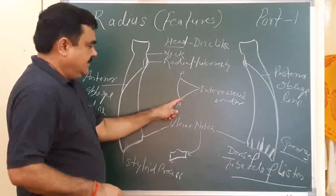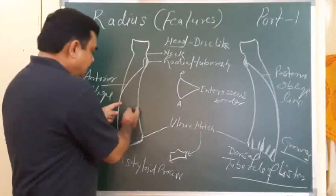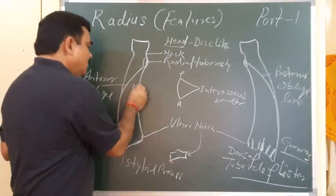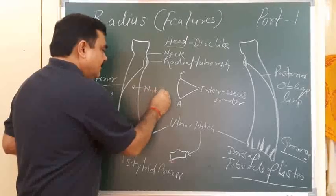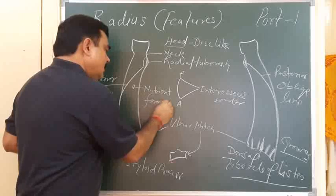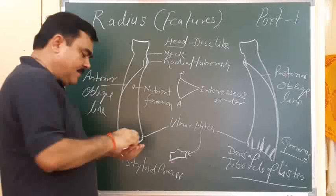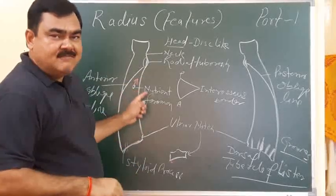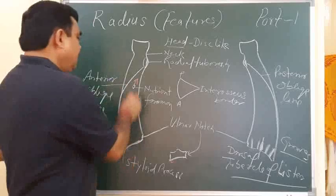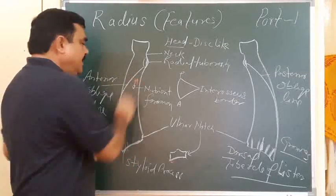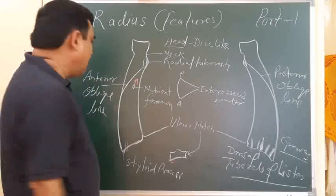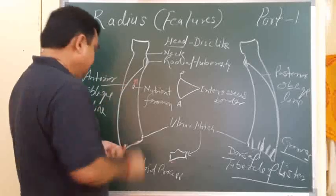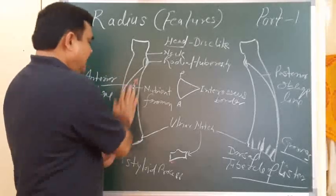Now the surfaces. The anterior surface has a nutrient foramen present on it. The direction of the foramen is upward, and the nutrient branch of the anterior interosseous artery passes through this nutrient foramen, going into the bone toward the lower end.